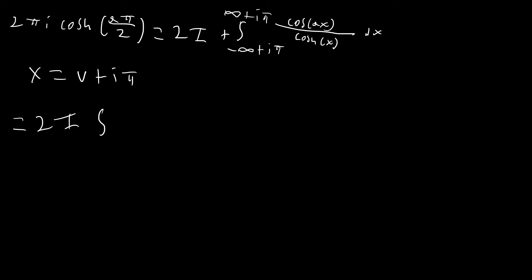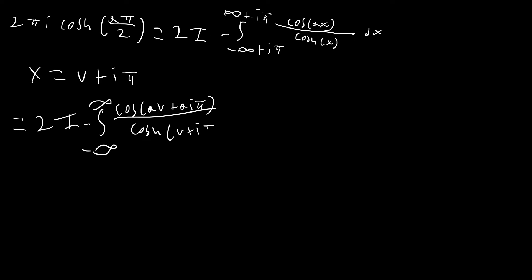One thing to note is that we should have a minus sign in front of this because the integral actually runs from infinity to negative infinity rather than from negative infinity to infinity, as we can see in our contour. So we need to multiply by negative 1. Now all we have to do is substitute in v, giving us cos(av + aiπ) / cosh(v + iπ), and then expand these using our identities.